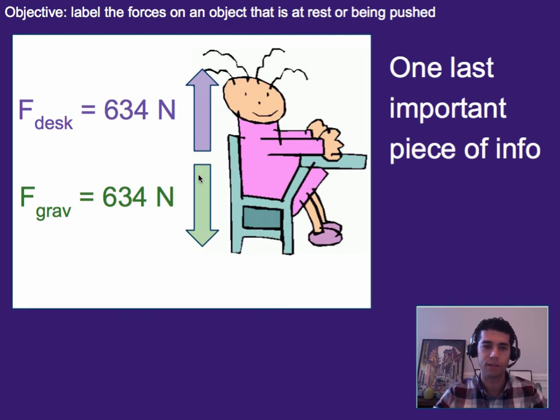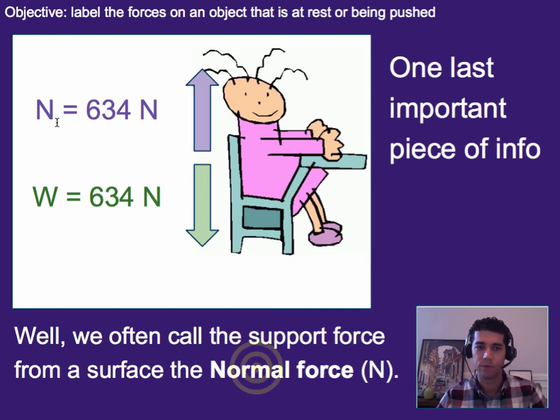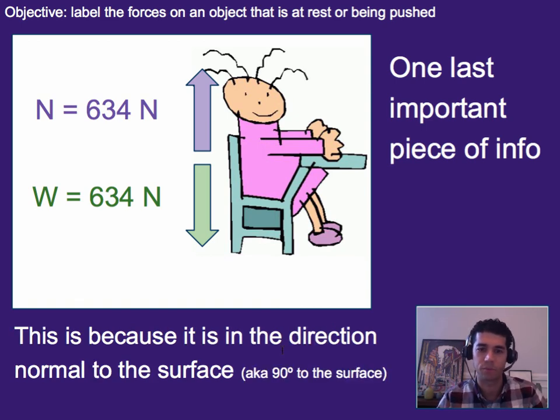One last important thing. We've been talking about this force from a desk or ground as a support force. We've labeled it as F with the subscript desk to represent that it's the force from the desk. We know that we can represent the force of gravity as weight or W as shorthand for it or a variable for it. We can also actually abbreviate the force from surfaces or desks as N. And the reason why we use N is because it is a normal force is what it's called. Now it's not normal in the sense of like normal versus weird. It's normal because in mathematics normal means 90 degrees to something. And this force is always 90 degrees to the surface that's supporting them. So if the surface is at an angle then the normal force would be at an angle.